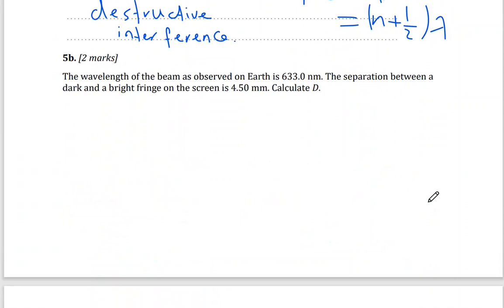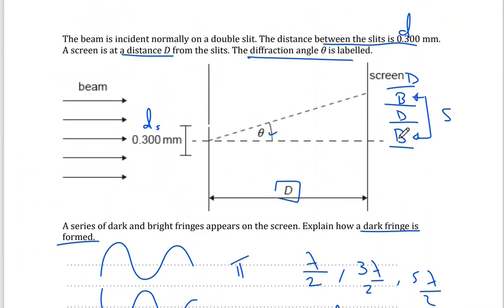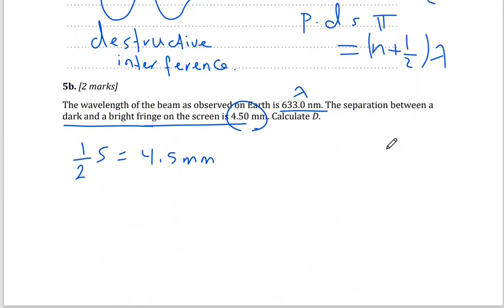The wavelength of the beam as observed on Earth is λ = 633 nanometers. The separation between a dark fringe and a bright fringe on the screen is 4.5 millimeters. This represents half of s (the separation between two bright fringes), so half s = 4.5 mm, which means s = 9 millimeters = 9 × 10⁻³ meters.